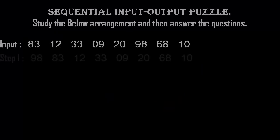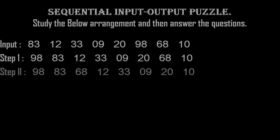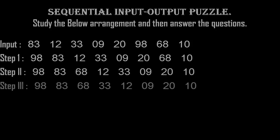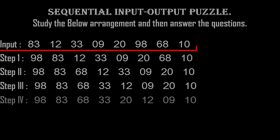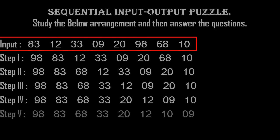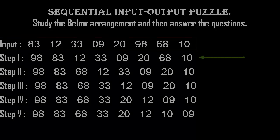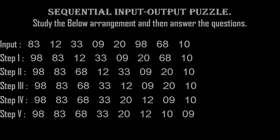Hello friends, today we are going to learn how to solve sequential input-output puzzles in logical reasoning. In this type of question, an input is given and then based on some pattern, five steps are given — the number of steps may vary from question to question. We need to find the hidden pattern, and based on the pattern there will be five questions we need to answer. It looks like a difficult and time-consuming question.